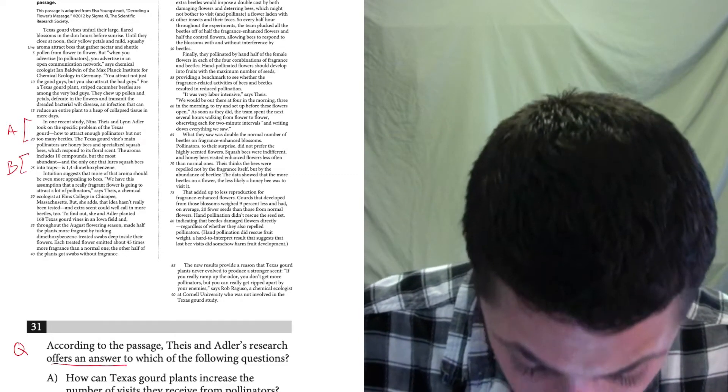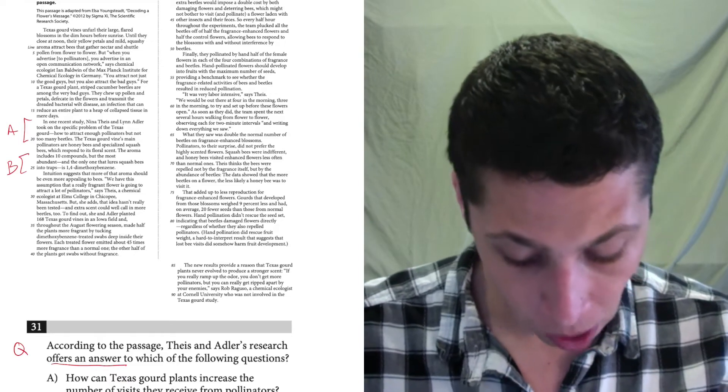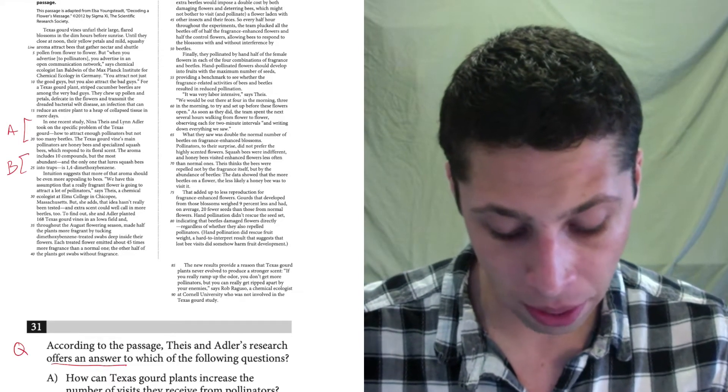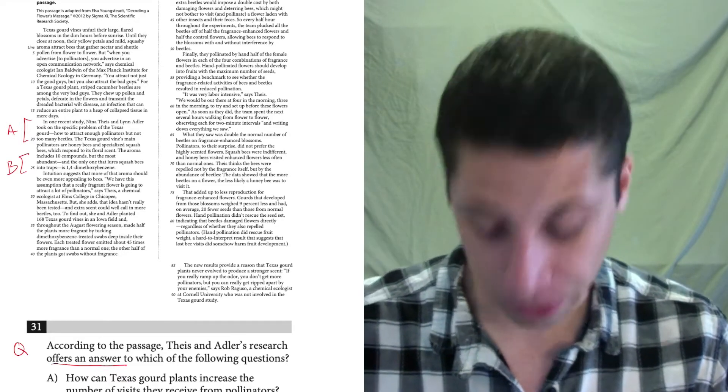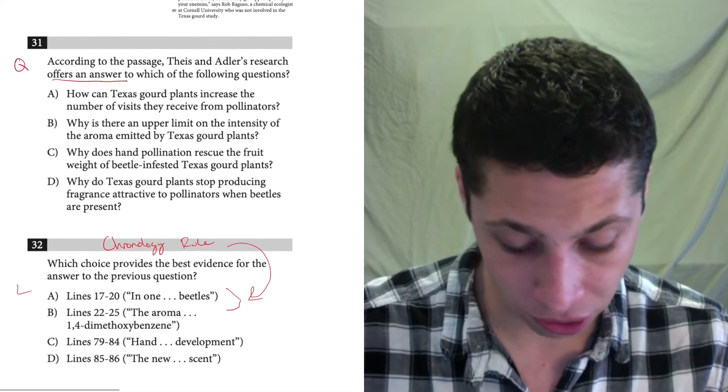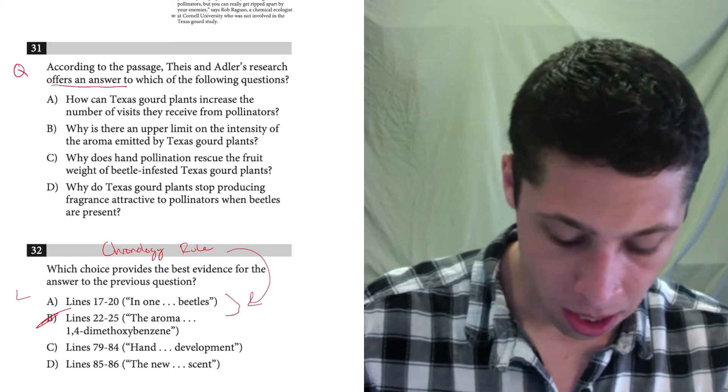The aroma includes 10 compounds, but the most abundant and the only one that lures squash bees into traps is 1,4-dimethoxybenzene. This is just like a random science fact. This does not answer any questions to me. This seems totally random.